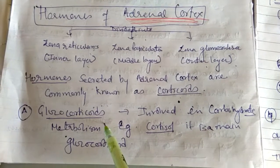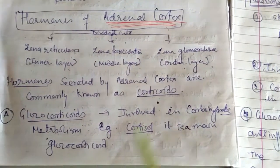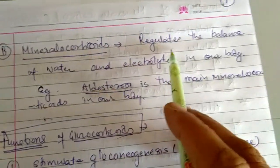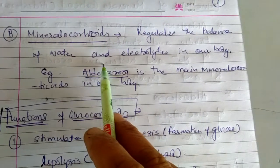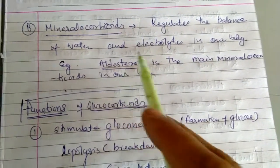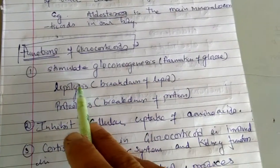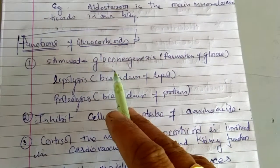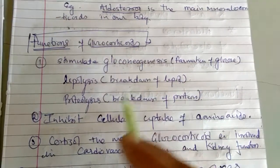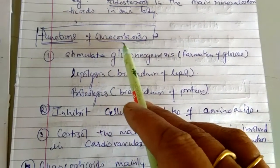These corticoids are mainly of two types: glucocorticoids and mineralocorticoids. Glucocorticoids are involved in carbohydrate metabolism and the main glucocorticoid is cortisol. Mineralocorticoids are mainly responsible for regulation of water and electrolyte balance in the body, and the main mineralocorticoid is aldosterone. Glucocorticoids stimulate gluconeogenesis — formation of glucose — lipolysis — breakdown of lipids — and proteolysis — breakdown of proteins. All these metabolic processes are stimulated by glucocorticoids.